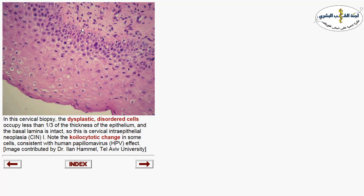Here you can see minimal dysplasia confined to the lower third of the cervical epithelium. Only the lower third is affected by dysplastic changes including hyperchromasia, irregular nuclear membrane, and nuclear disarray. The cells are not respecting each other, with loss of streaming. These dysplastic changes confined to the lower third represent cervical intraepithelial neoplasia grade one.